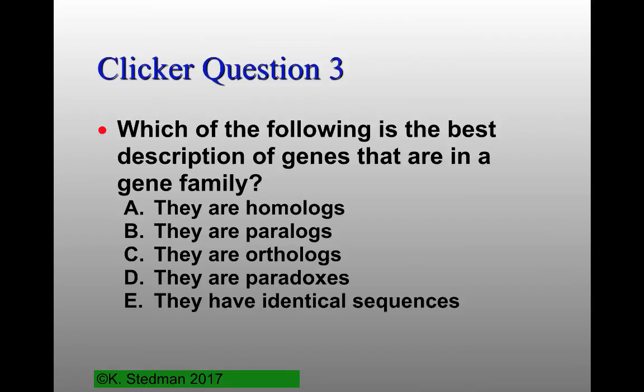Here's a clicker question: which of the following is the best description of genes that are in a gene family? They're homologs, they're paralogs, they're orthologs, they're paradoxes, or they have identical sequences to each other. We can talk about this on D2L in the discussion groups.